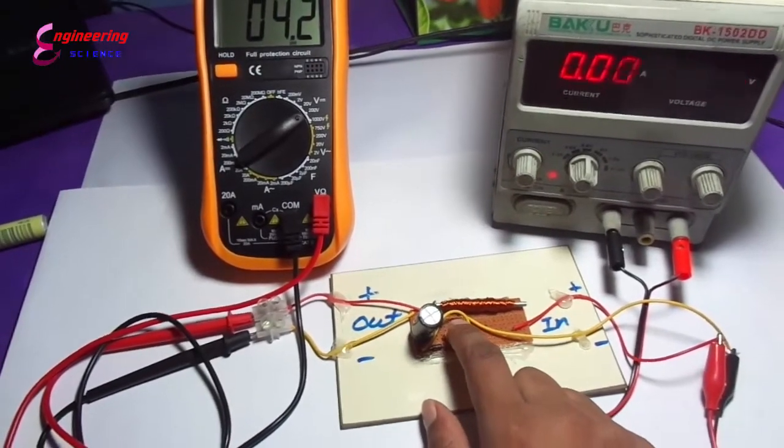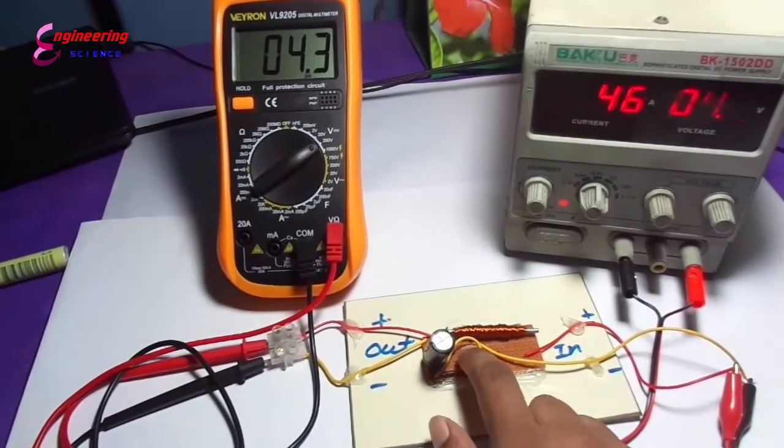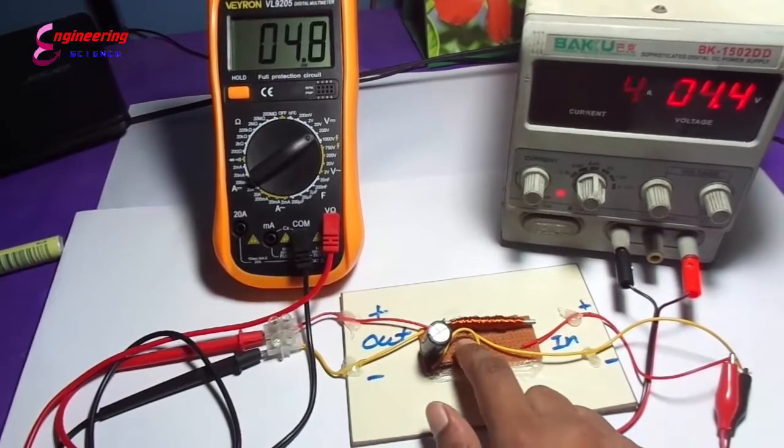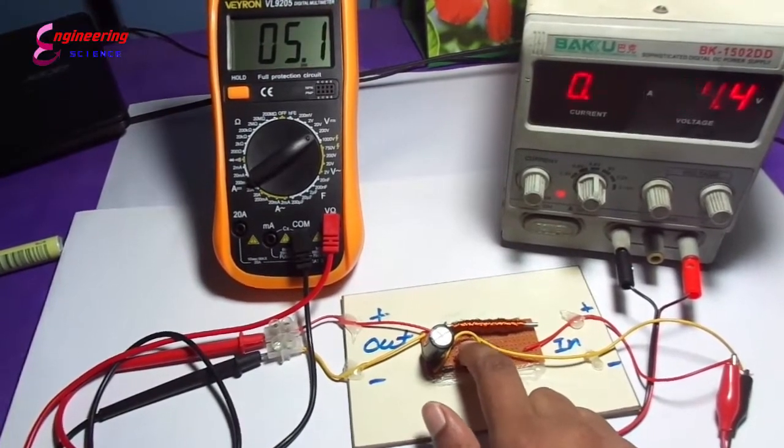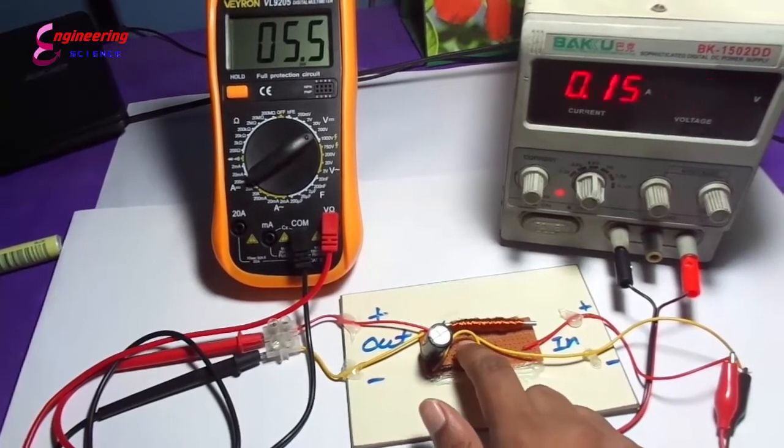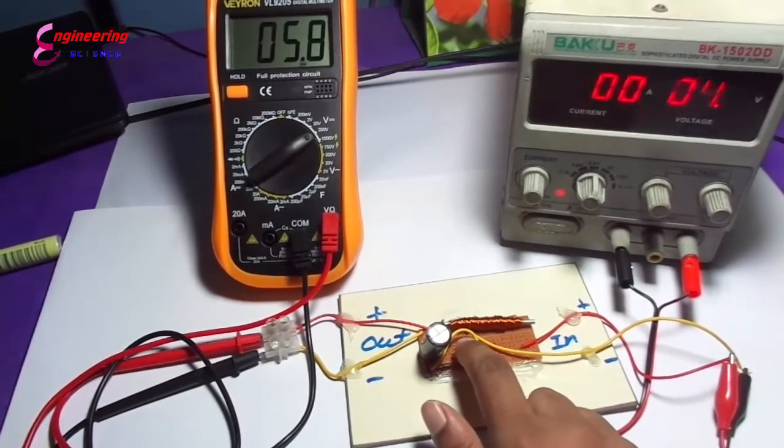Let's try it. You can see the multimeter showing voltage up to 5 volts. The input voltage is 4.4 volts.